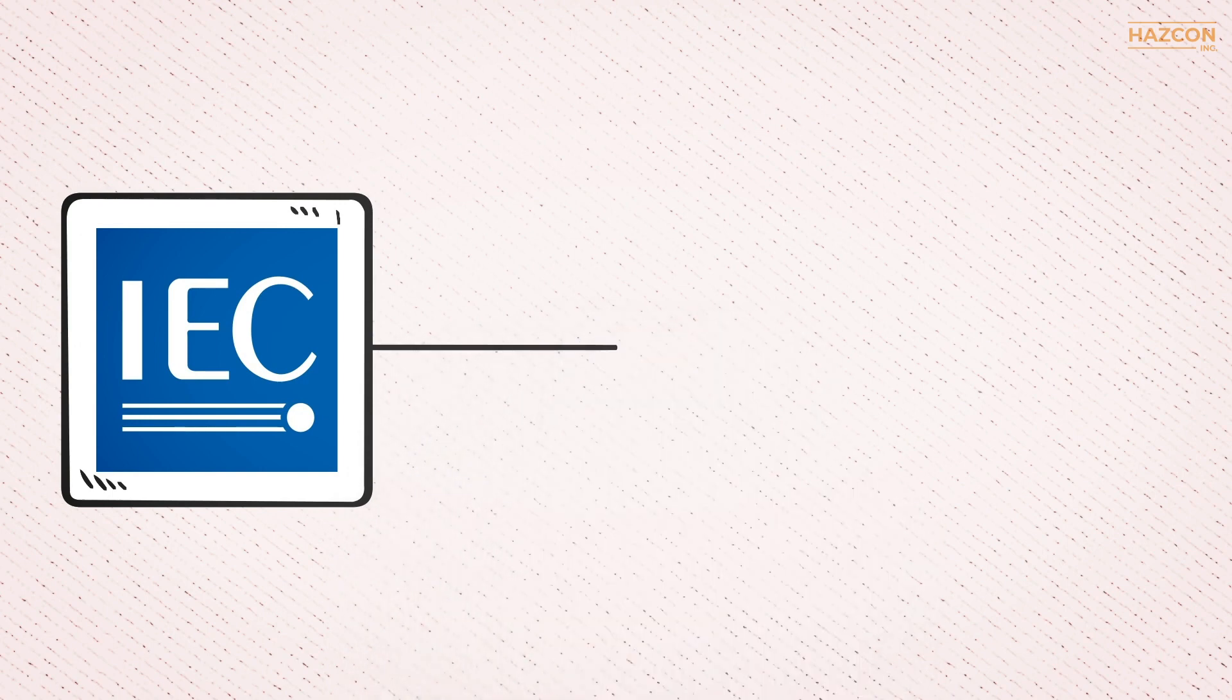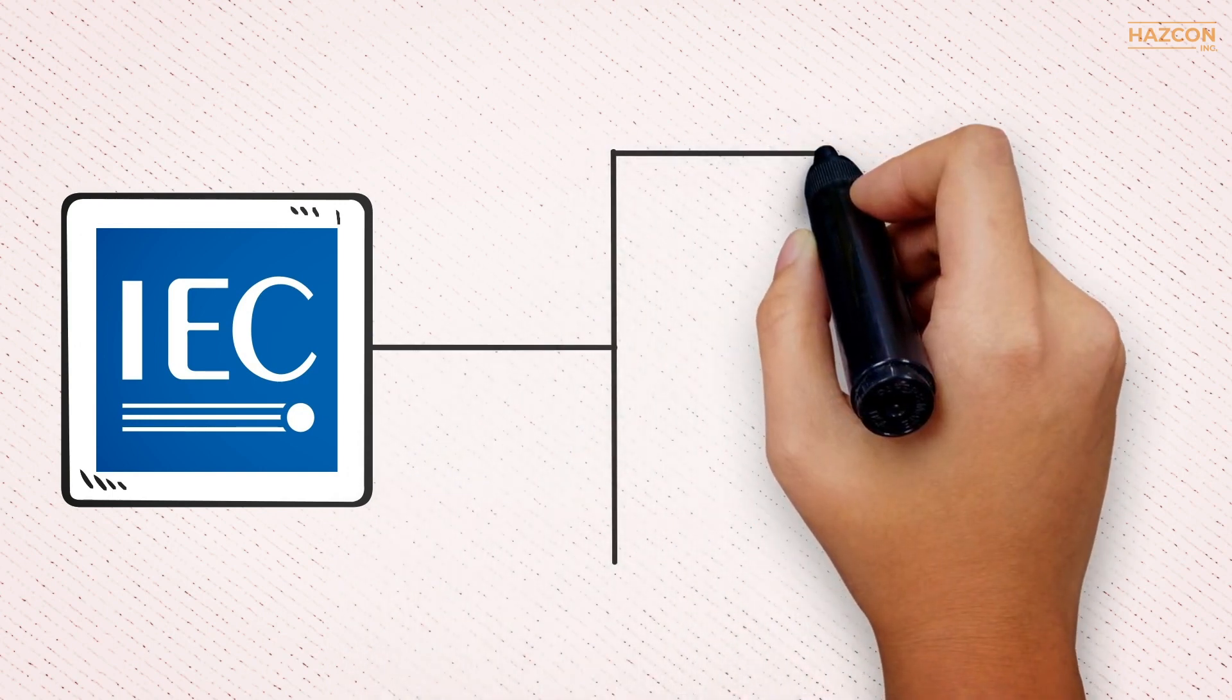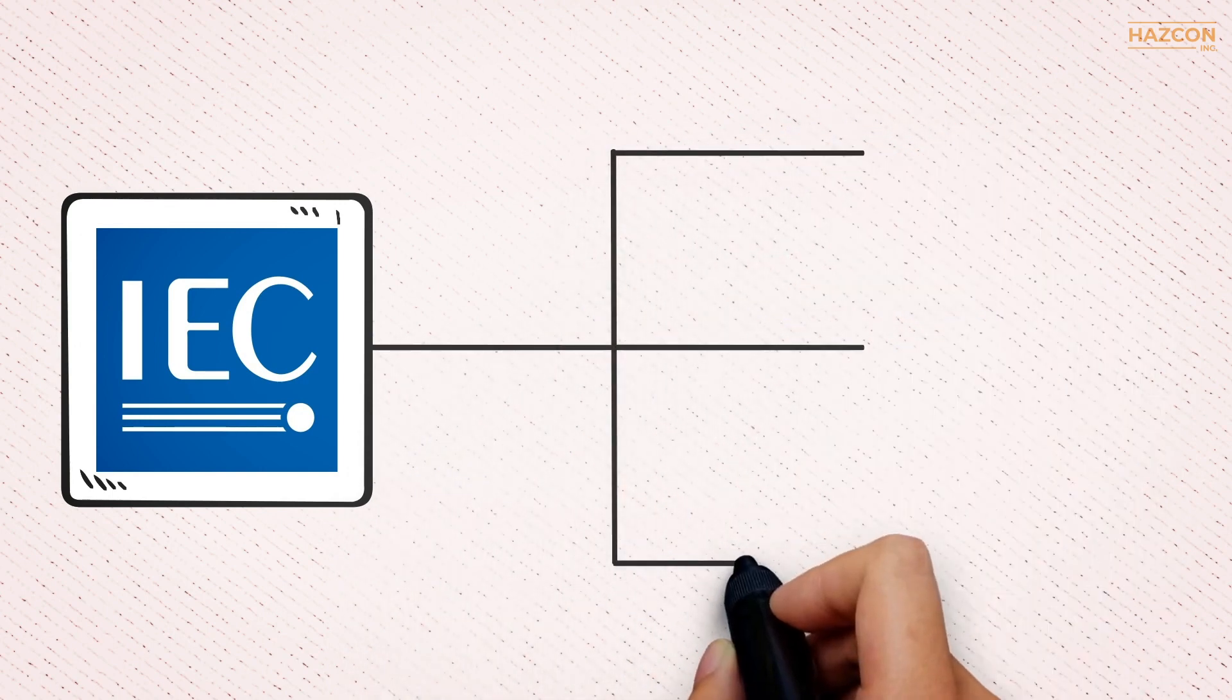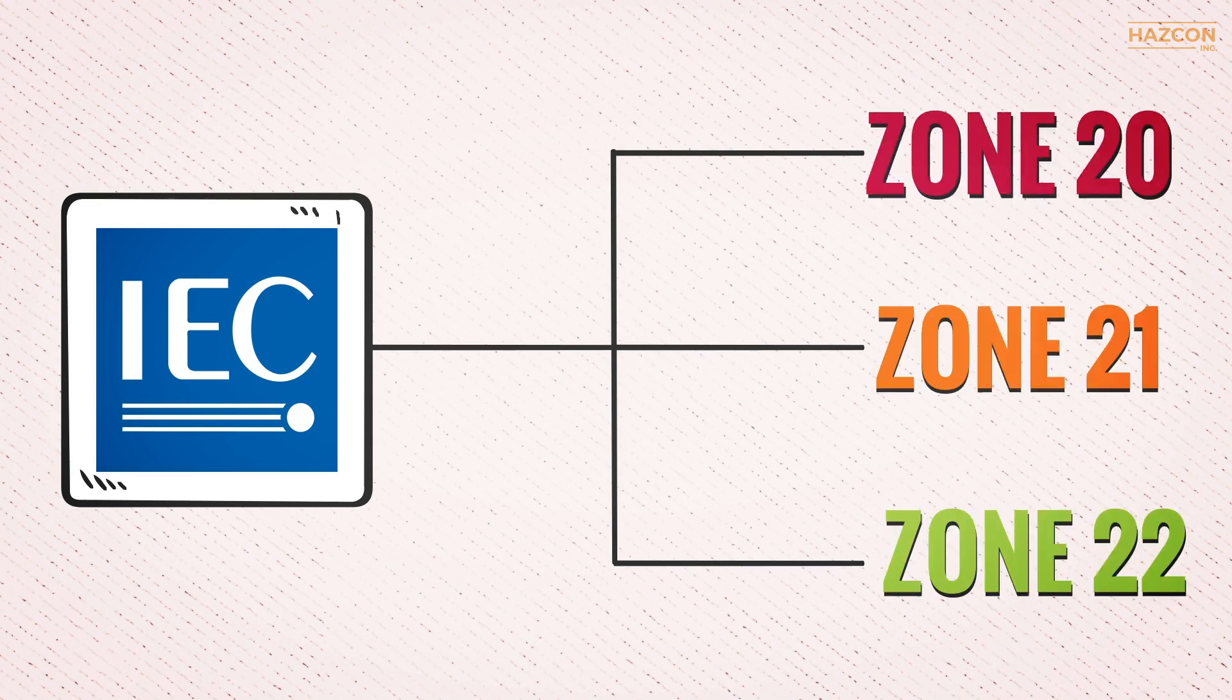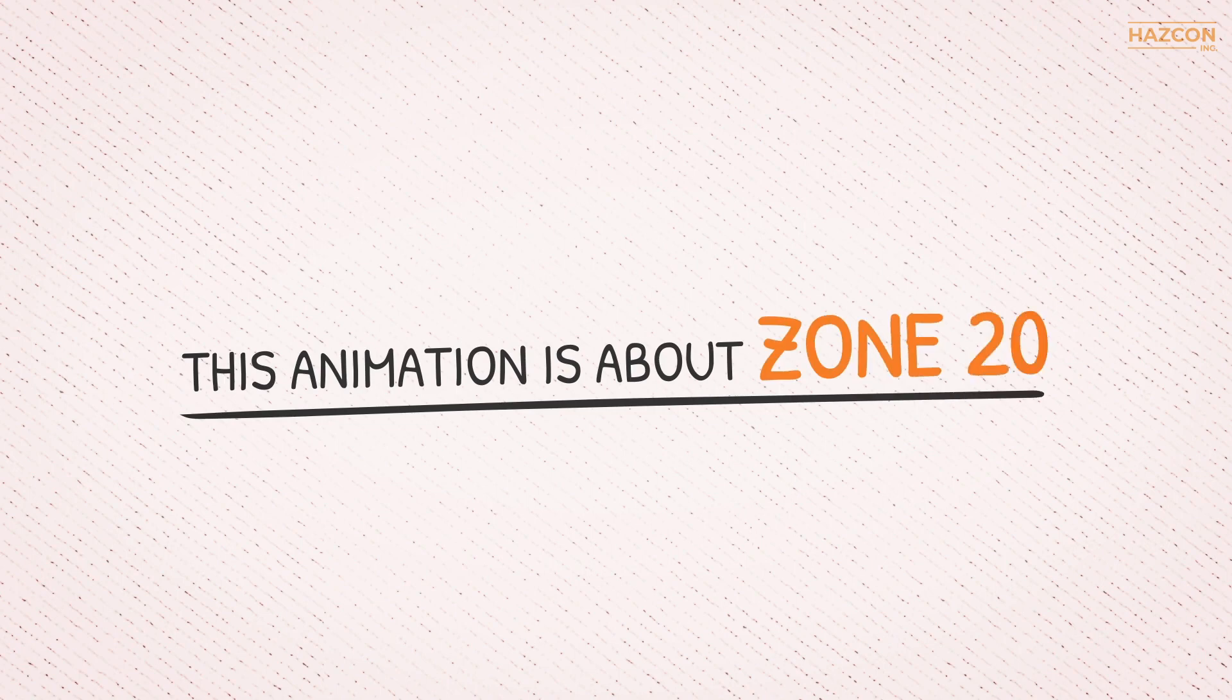As per International Electrotechnical Committee standards, the areas where explosive dusts may be present are categorized into three groups: Zone 20, Zone 21, and Zone 22. This animation is about Zone 20.